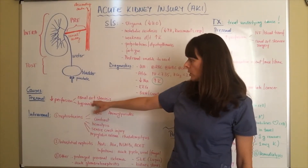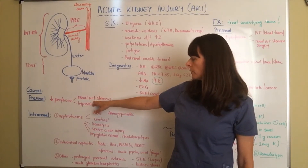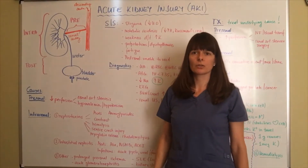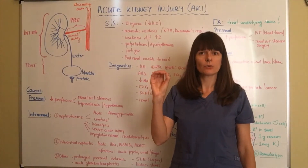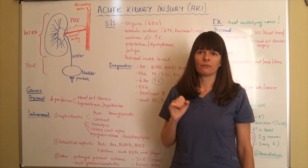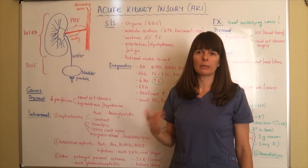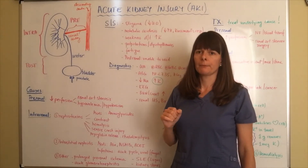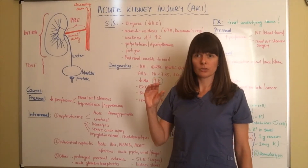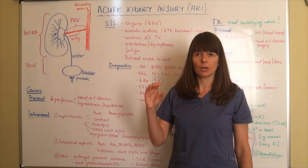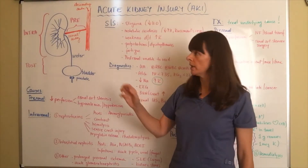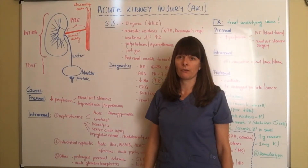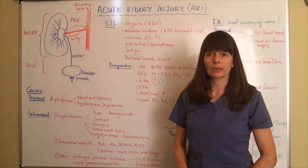The other pre-renal cause is renal artery stenosis. Stenosis means there's a narrowing or decrease in the opening of any kind of artery or valve. When the renal artery is stenosed, something doesn't allow it to open the way that it should, resulting in decreased perfusion to the kidney and leading to pre-renal failure.